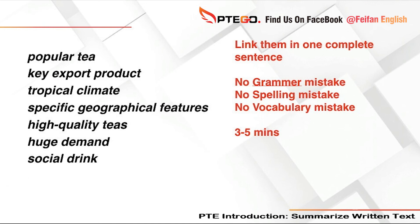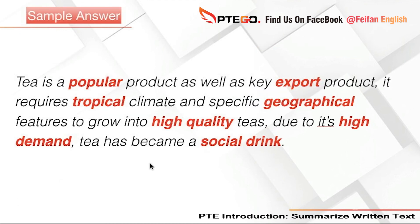Using those keywords, a sample answer would look like this: 'Tea is a popular product as well as a key export product; it requires a tropical climate and specific geographical features to grow into high quality teas, and due to its high demand, tea has become a social drink.' An answer like this will give you a good score in your PTE writing exam. Keep watching more such videos and best of luck for your next exam.